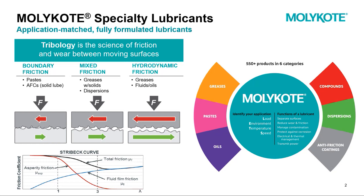So you get some separation, but on occasion you'll get a little bit of contact as well. On the right, we have our Mollie Coat wheel. This allows you to identify your application — you can see there's load, environment, temperature, and speed, plus a reminder of the different functions a lubricant has. Around the outside, we have the six different product families that Mollie Coat offers: greases, pastes, oils, compounds, dispersions, and anti-friction coatings. But today we're just going to talk about greases.